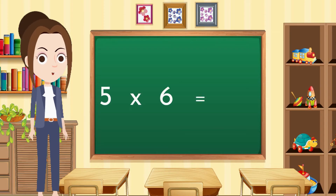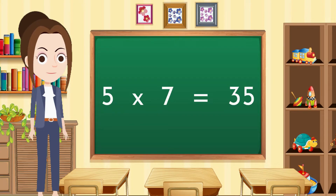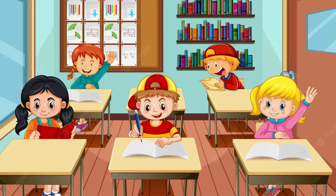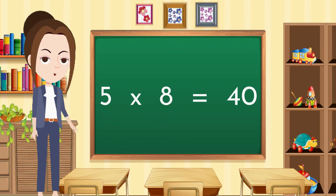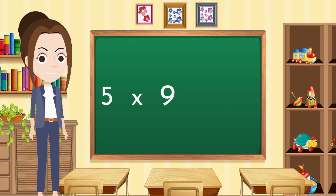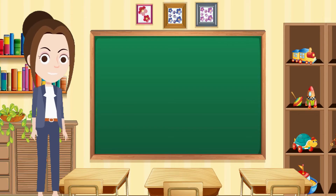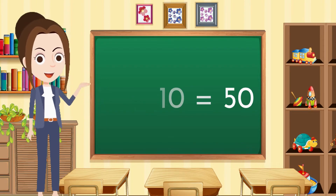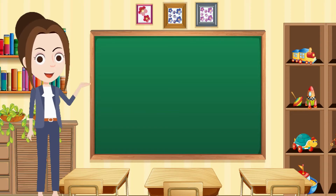Five sixes are thirty. Five sevens are thirty-five. Five eights are forty. Five nines are forty-five. Five tens are fifty. Dear kids, you have read the table of five with me.